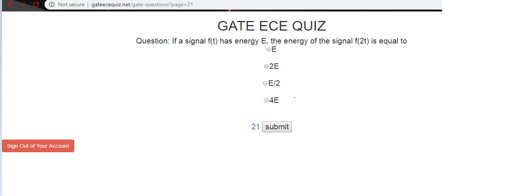Hello all, welcome to the new video of signals and systems. In this video, we will see a question which had appeared in GATE ECE examination for 1 mark. The question is, if a signal F of T has energy E, then what is the energy of the signal F of 2T? There are 4 options. Let's see which among these is the right one.